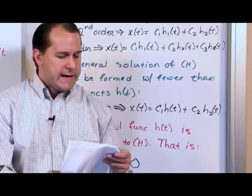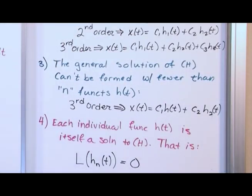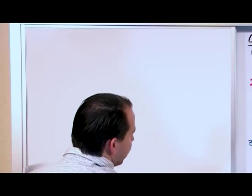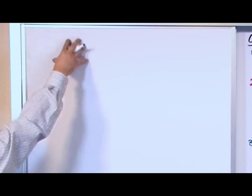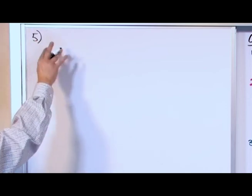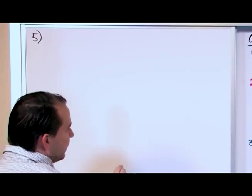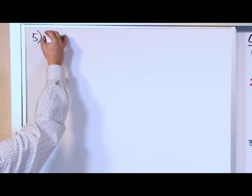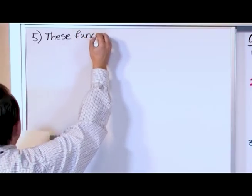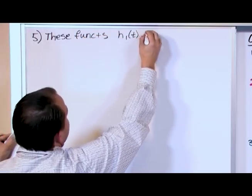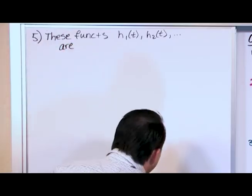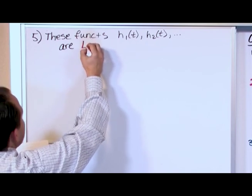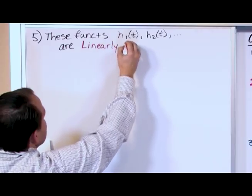Now let's take it one step further and introduce observation five. We've given you four observations — the first two we kind of already knew, the second two make sense once you think about it. For the fifth one, I want to give a whole board because I want to give you a little proof. We're talking about the functions h₁, h₂, h₃ that comprise the general solution. Observation five says that these functions h₁(t), h₂(t), and so on, are what we call linearly independent.